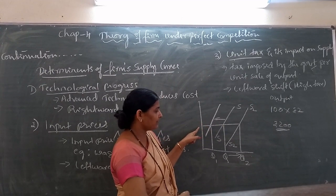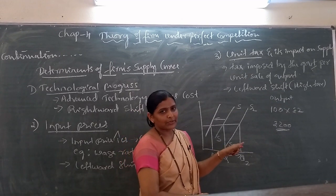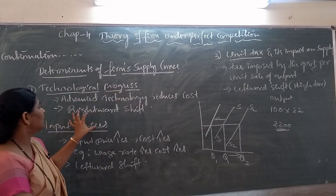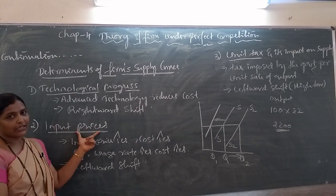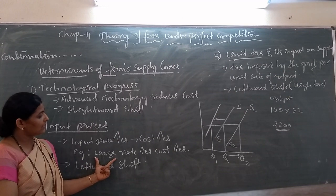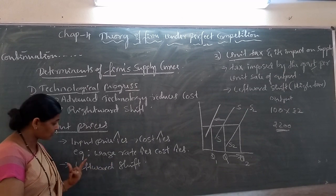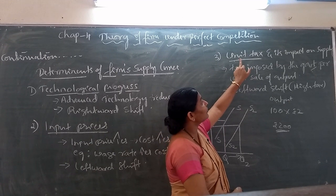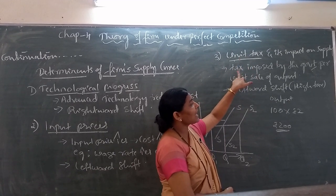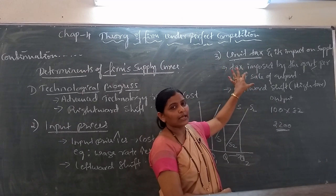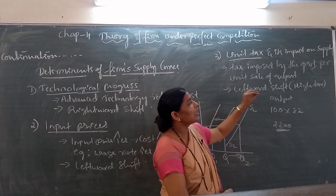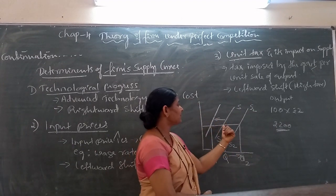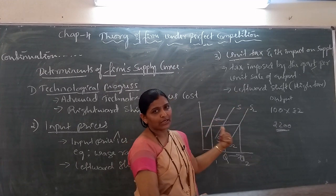The supply curve takes a leftward shift with lesser supply. So which are the important determinants of supply curve? First, technological progress — if there is technological progress, then rightward shift with more supply. Second, input prices — if input prices are high, then supply is less and supply curve shifts towards the left. Third, unit tax and its impact on supply. What is unit tax? Tax imposed by the government per unit sale of output. If tax rate increases, cost increases, and the firm produces less and supplies less, so the supply curve shifts towards the leftward.